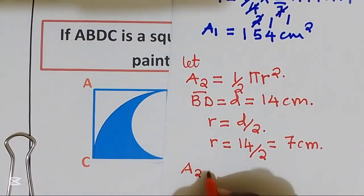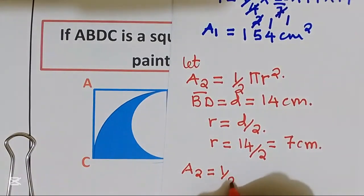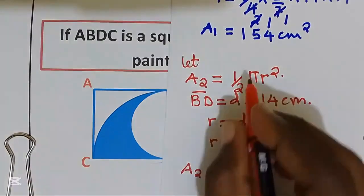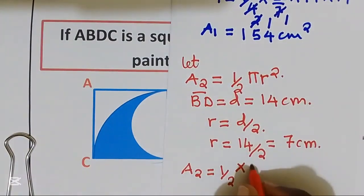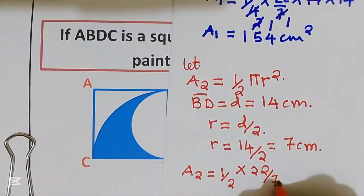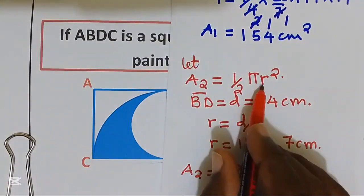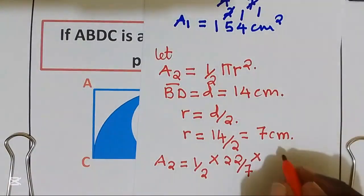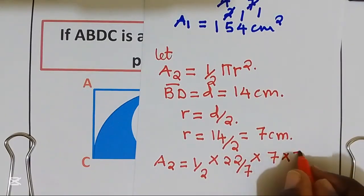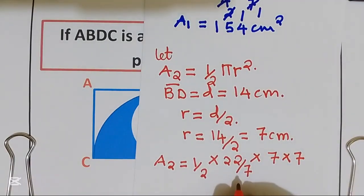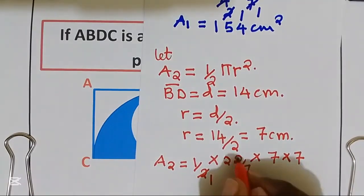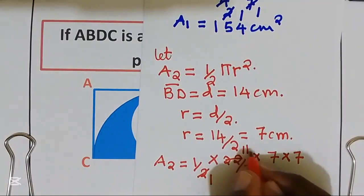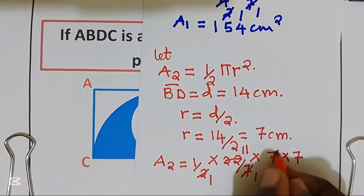Now, area 2 is equal to a half multiplied by pi 22 over 7, multiplied by r squared, that is going to be 7 multiplied by 7. Let us simplify, by 2, 1, by 2, we get 11, by 7, 1, by 7, we get 1.